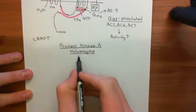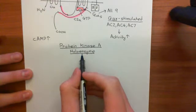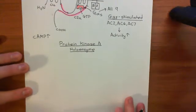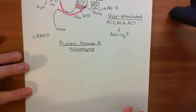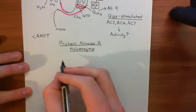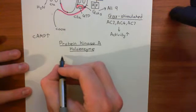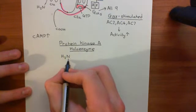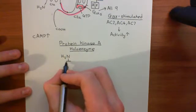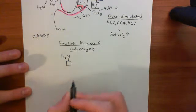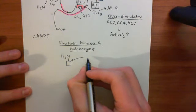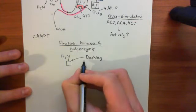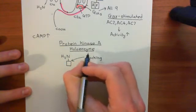It's going to have two proteins which are known as regulatory subunits of protein kinase A, and two subunits that are known as the catalytic subunits of protein kinase A. A regulatory subunit of protein kinase A is a protein with an amino terminus, and the first domain it has is something known as a docking and dimerization domain.